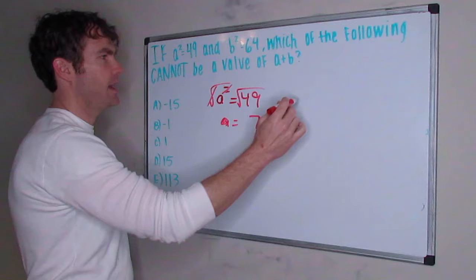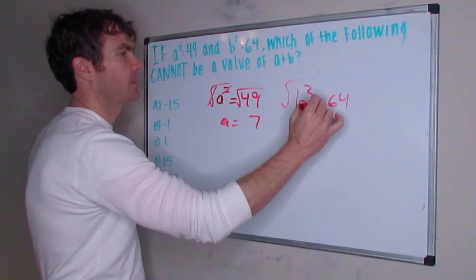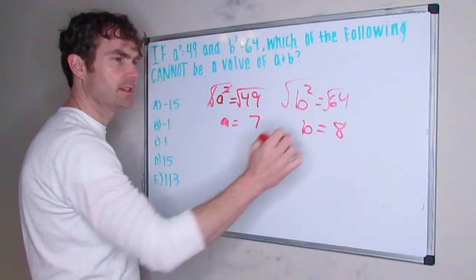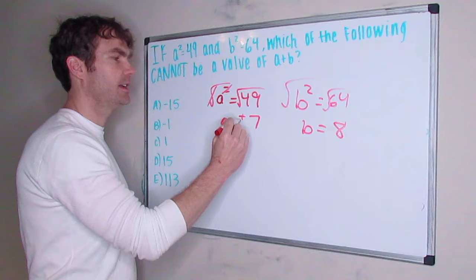And same with b. b squared is 64, you square root both sides, or say what squared is 64, so b is 8. Seems easy right? Not so fast. Remember when you square root something it's plus or minus.